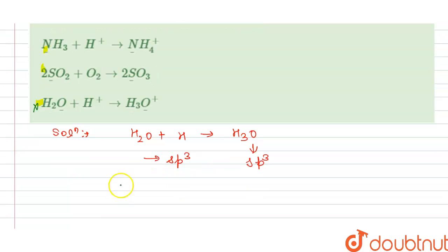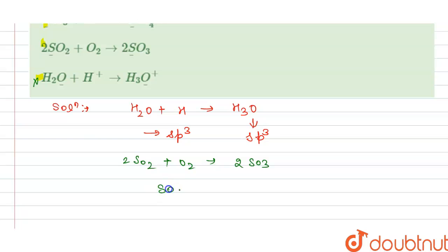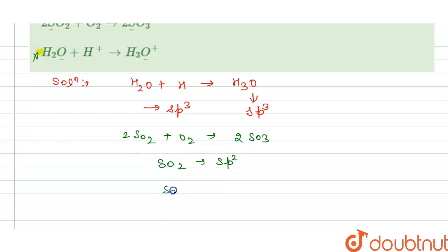Now we check for 2SO2 plus O2, and this gives us two times SO3. In this, SO2 has the hybridization sp2, and we have the S2O3 as also hybridization sp2. So this is sp2, so no change.